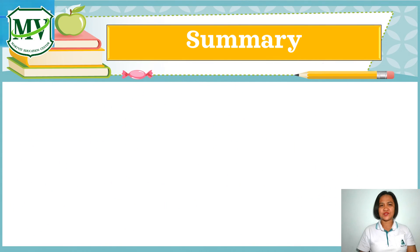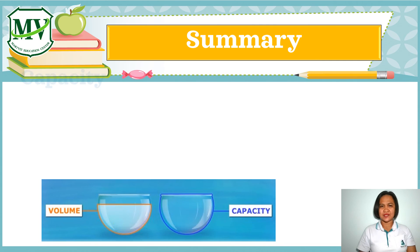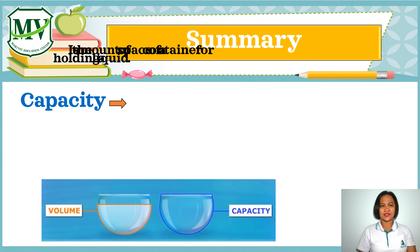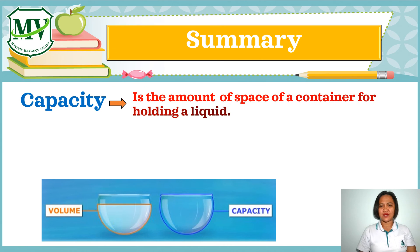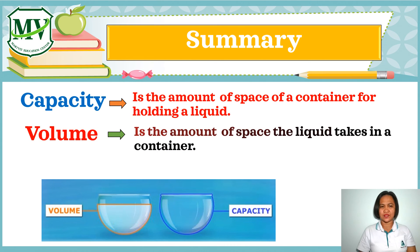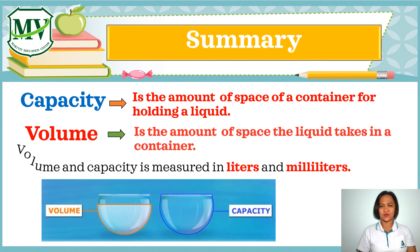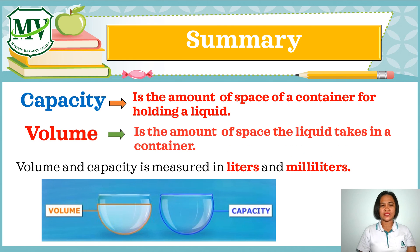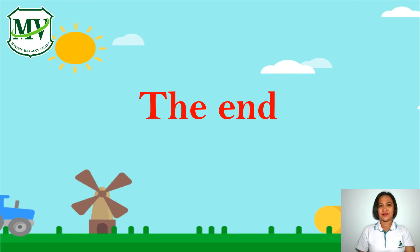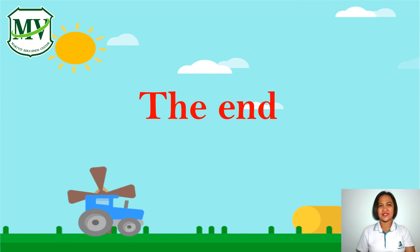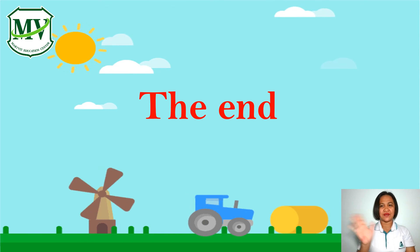Let's do the recap. In this lesson, we learned that capacity is the amount of space of a container for holding a liquid, while volume is the amount of space the liquid takes in a container. Volume and capacity is measured in liters and milliliters. This is the end of today's topic. See you next time. Bye-bye!